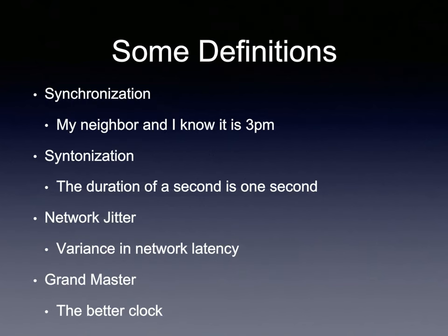Two other important concepts: network jitter and grandmasters. The biggest enemy of high-quality network time is jitter — if packet propagation time between the better clock and clients is constant, time-transfer calculations are much easier. But jitter is a factor in every network. In network-based timekeeping, the grandmaster is the better clock — your local grandmaster is the clock you're getting your time from.